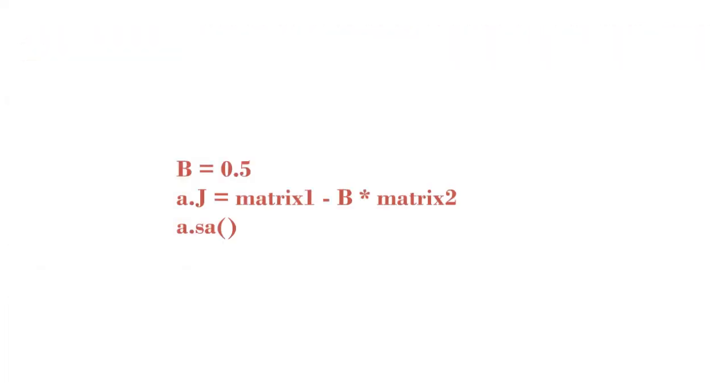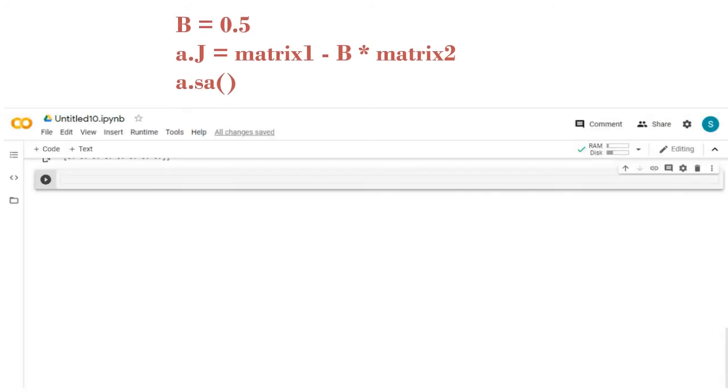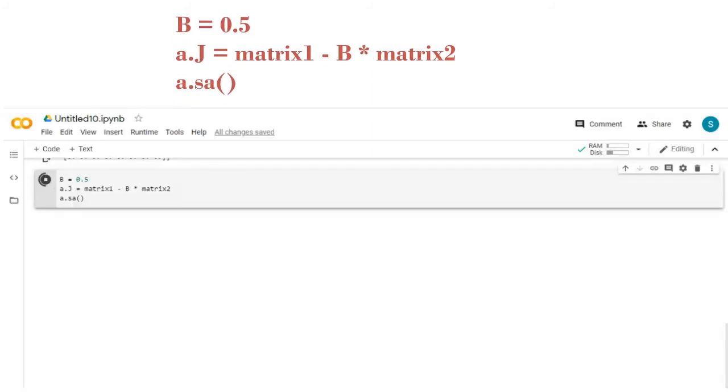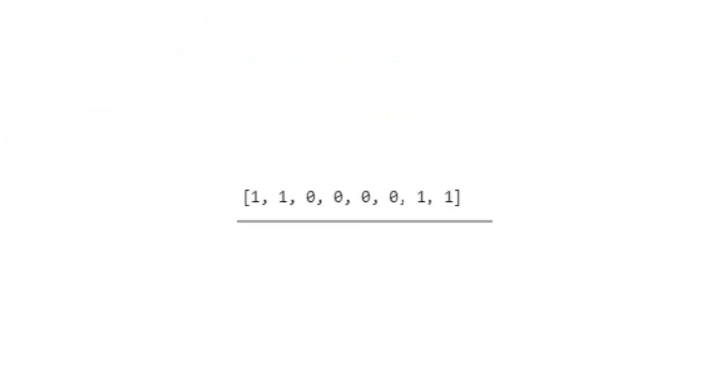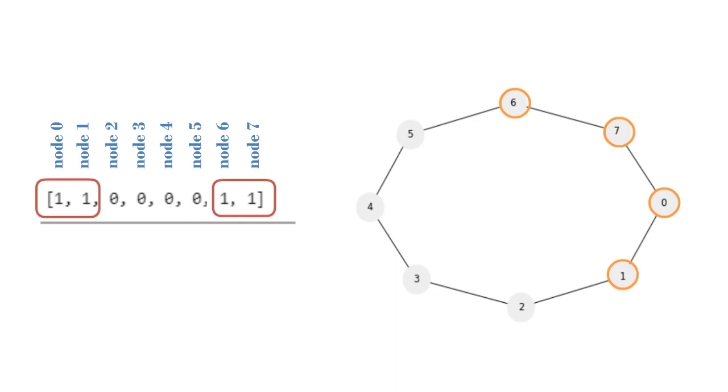Now to partition the graph, let's take B equals 0.5 and use the equation to partition. This is the answer we got and let's see what it means. All the ones are partitioned as one group, and all the zeros as another.